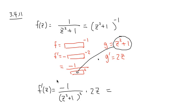And finally, I can put it all together. I can put a 2z on the top, so I will have negative 2z over z squared plus 1 in parenthesis, and then squared.